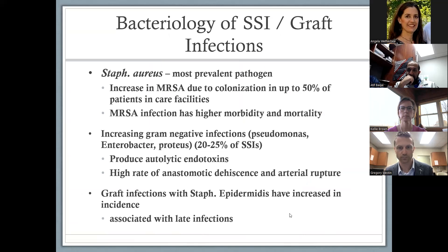What's the bacteriology of these problems? Most are staph aureus, and unfortunately over the last 20 years an increasing number have become MRSA, which is much harder to deal with. In recent years we've seen an increasing number of gram-negative infections — up to 25% of surgical site infections now — also exceedingly virulent. Co-existent with this has been an increase in staph epi infections involving vascular grafts.